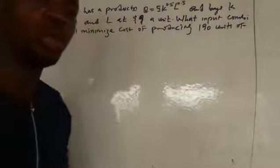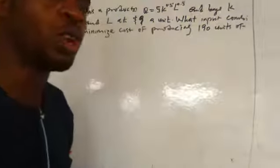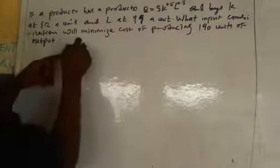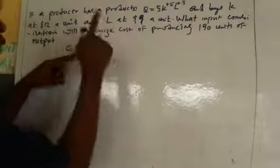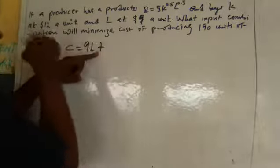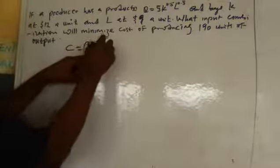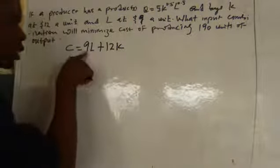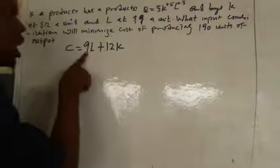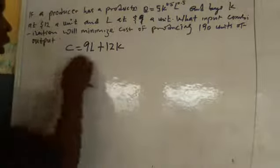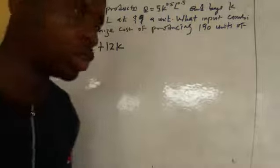To solve this kind of cost minimization question, the first thing to do is to form your cost equation. We write C equals nine dollars multiplied by the units of labor, plus twelve dollars multiplied by the units of capital, giving us: C = 9L + 12K. When you sum the number of labor units multiplied by their price and the number of capital units multiplied by their price, you get your cost equation.